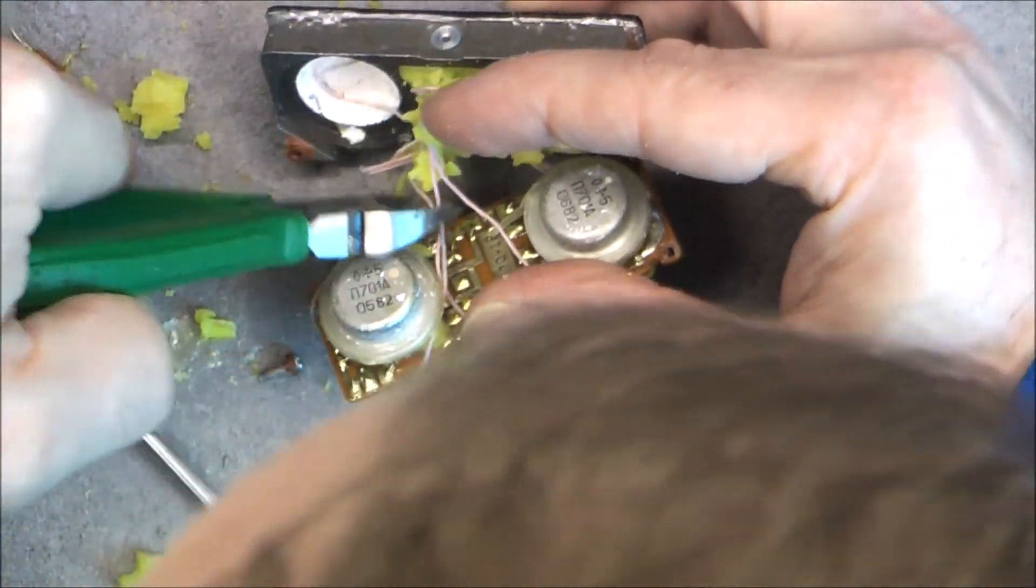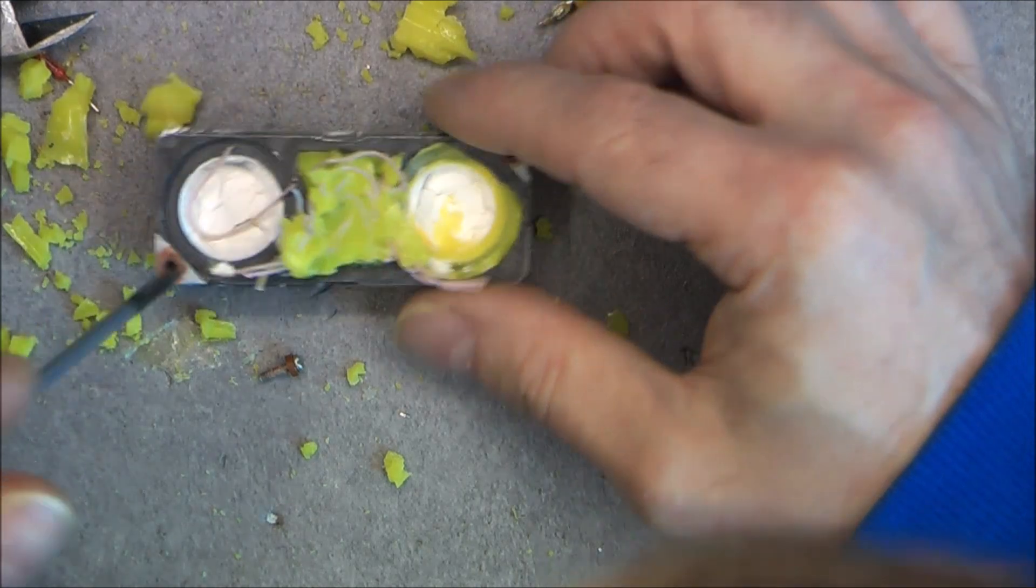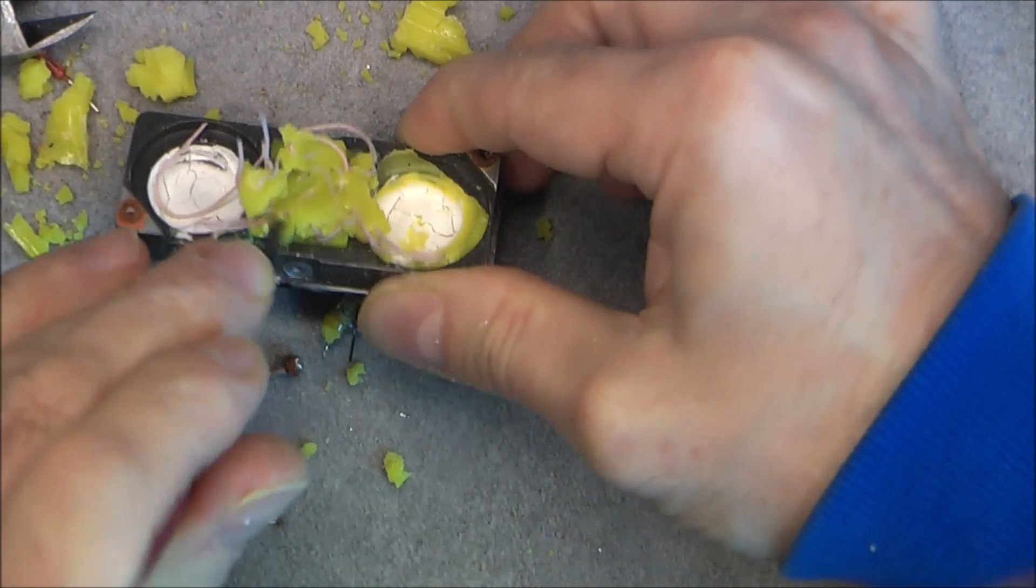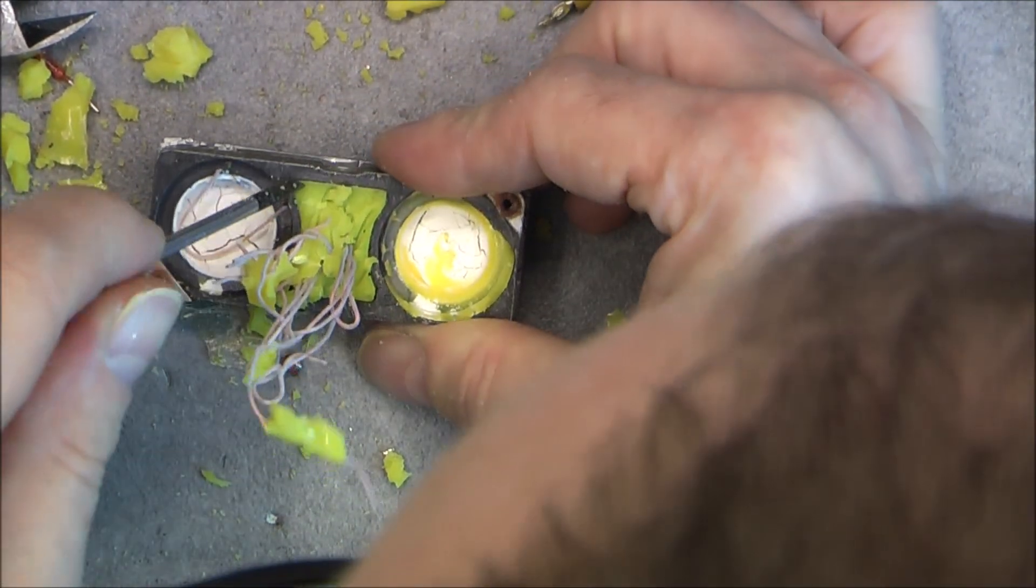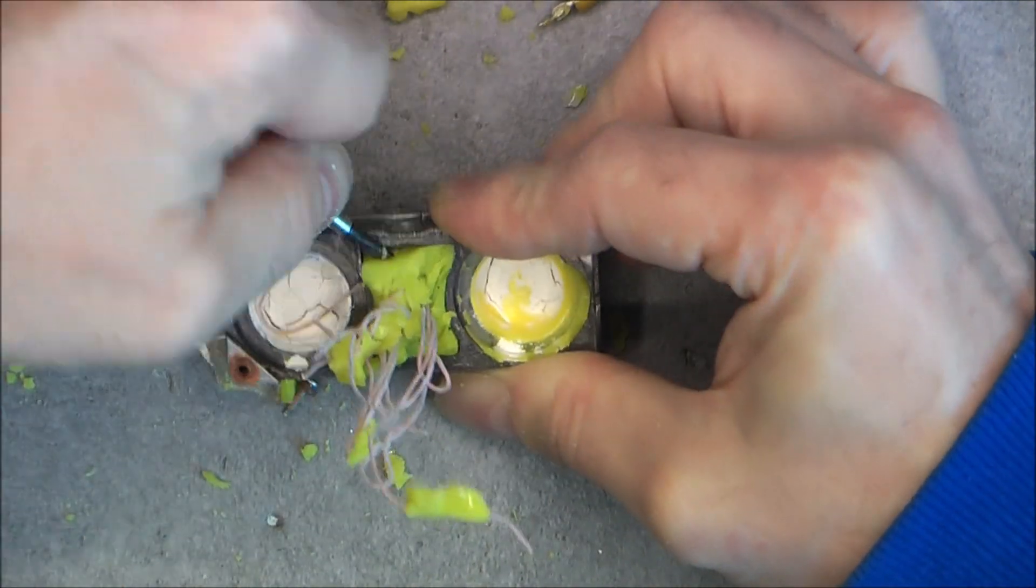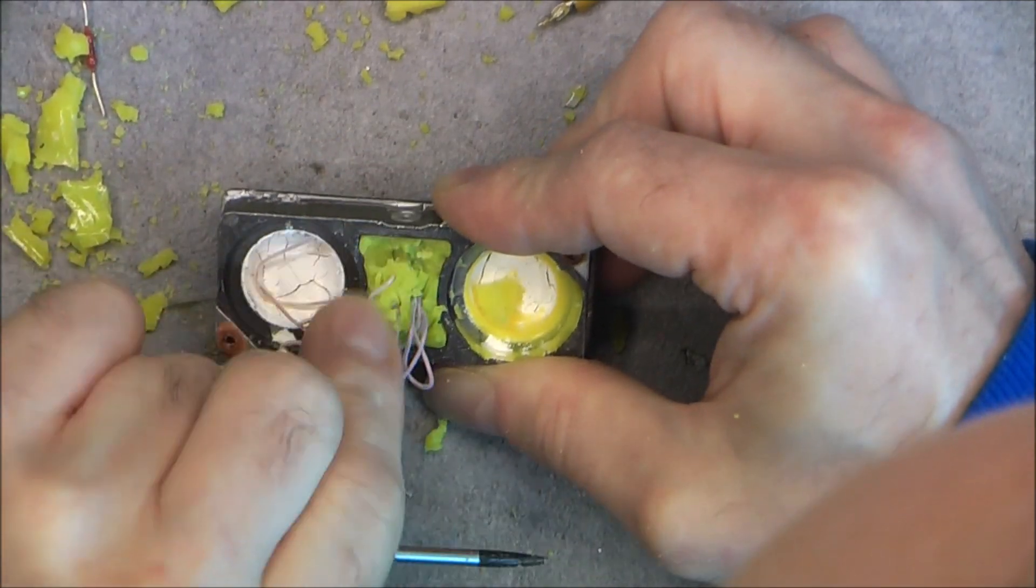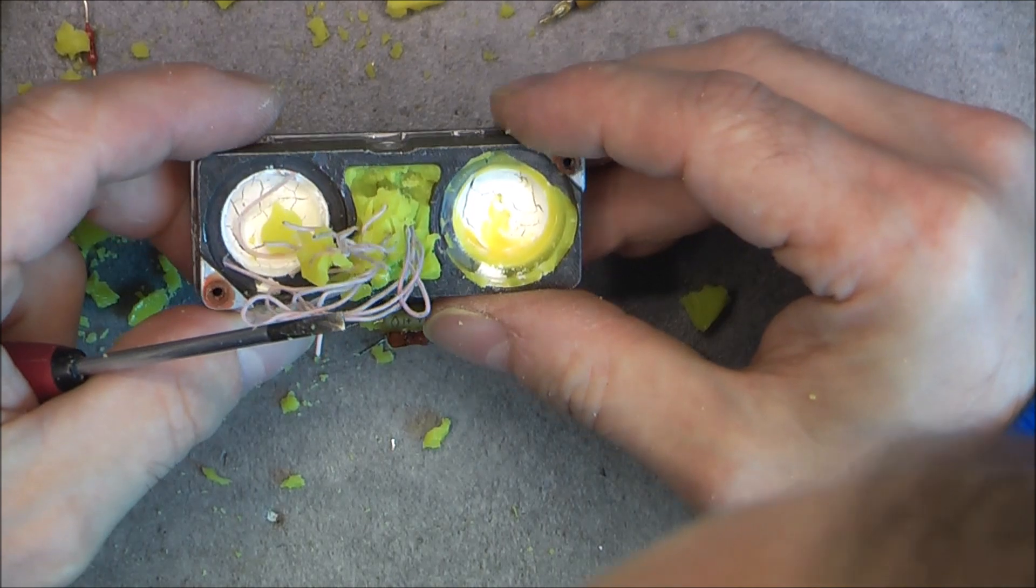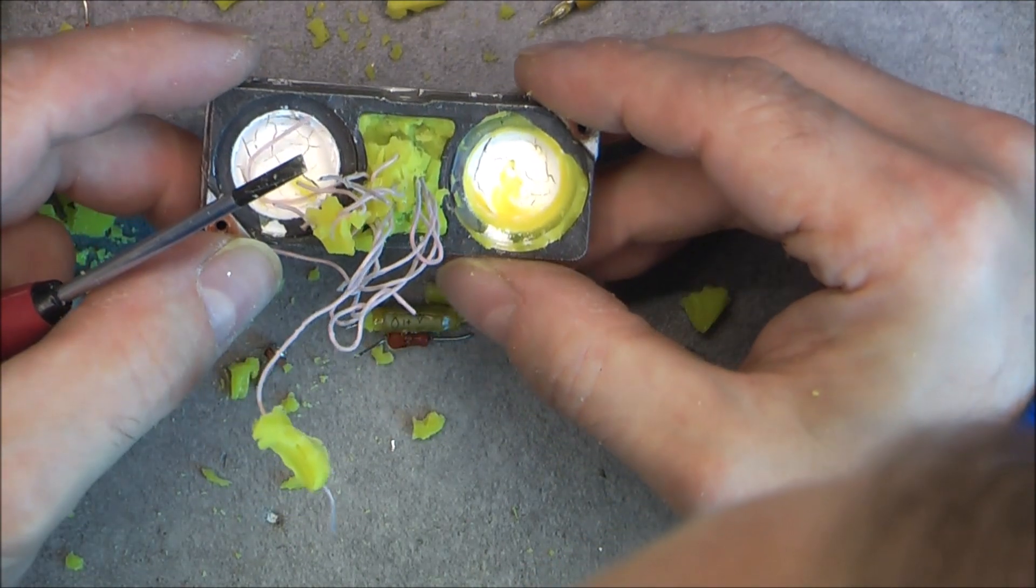So I will cut the wires, see if there is anything else in here. Seems not, it is just the wires going. Two of them. So this is an aluminum block.